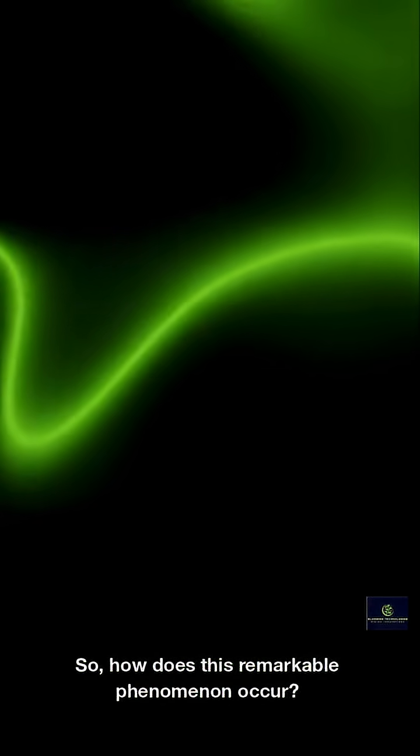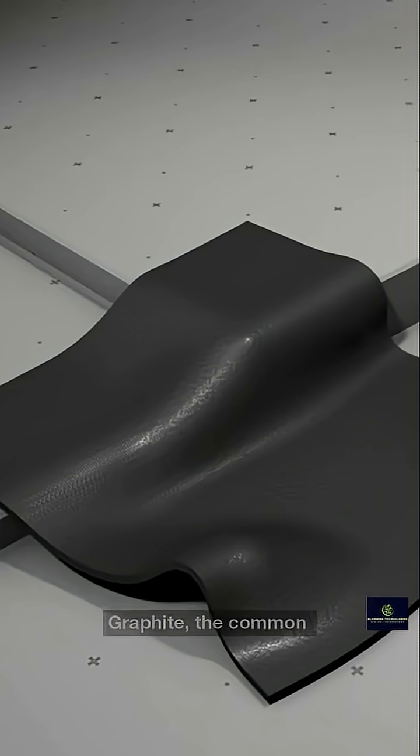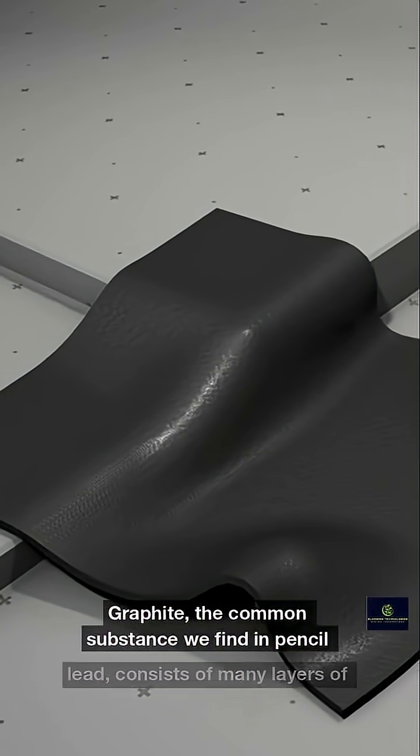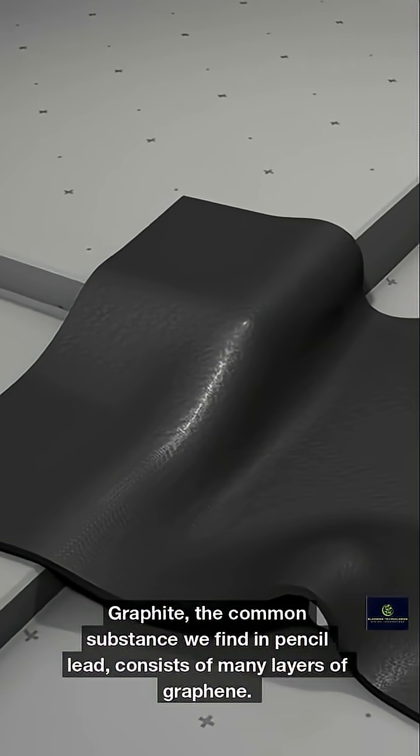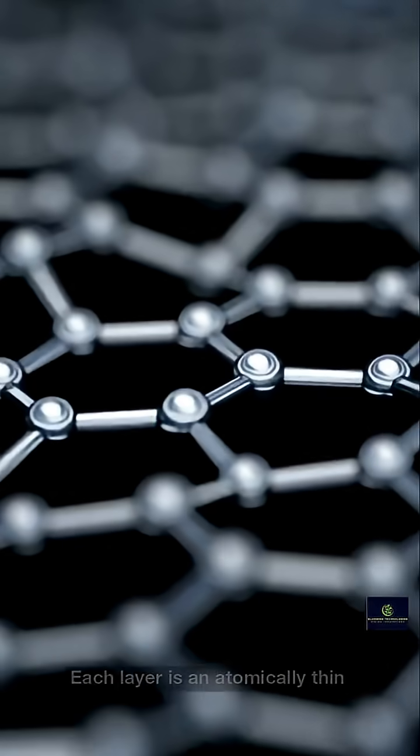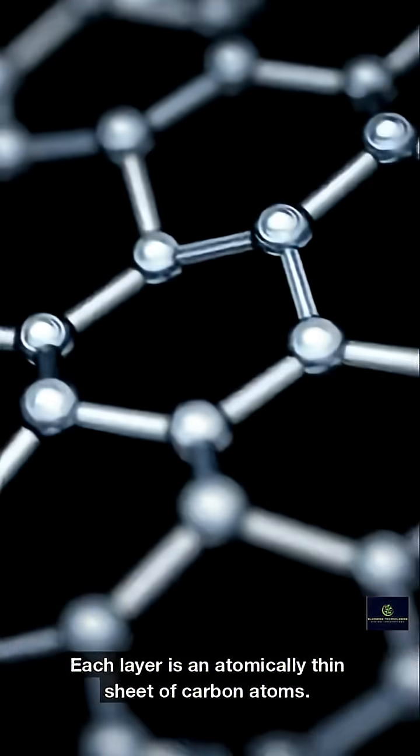So, how does this remarkable phenomenon occur? Let's break it down. Graphite, the common substance we find in pencil lead, consists of many layers of graphene. Each layer is an atomically thin sheet of carbon atoms.